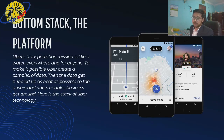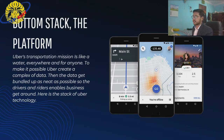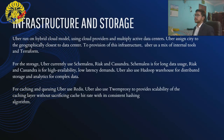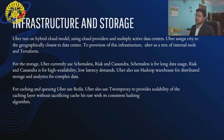Uber's transportation mission is to make transportation available everywhere and for anyone. To make this possible, Uber creates a complex amount of data, which gets bundled up as neatly as possible so that drivers and riders can enable business movement. For technology infrastructure and storage, Uber uses a hybrid cloud model using cloud providers and multiple active data centers, assigning cities to the geographically closest data center.